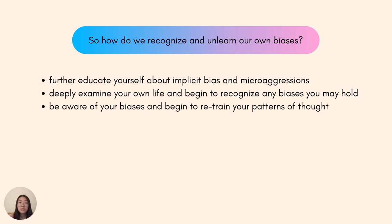So how do we recognize and unlearn our own biases? You can start by further educating yourself about implicit bias and microaggressions. Deeply examine your own life and begin to recognize any biases that you may hold, and think before you speak. Be aware of your biases and begin to retrain your brain and your patterns of thought. By doing so, we can begin to dismantle our own biases and together create a more inclusive community.